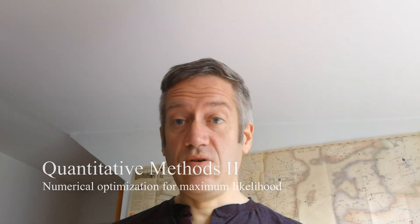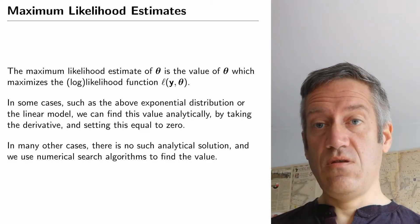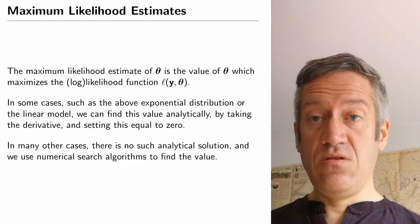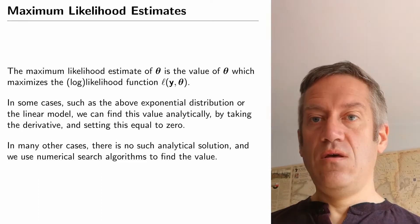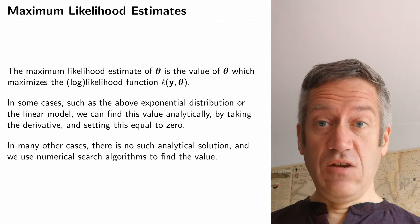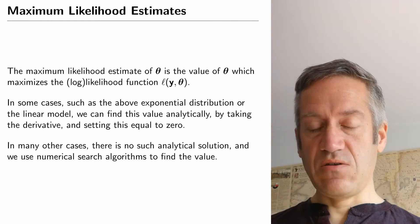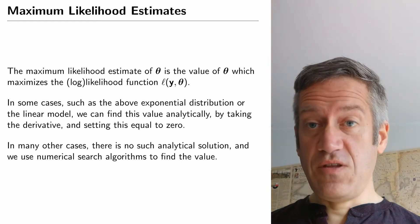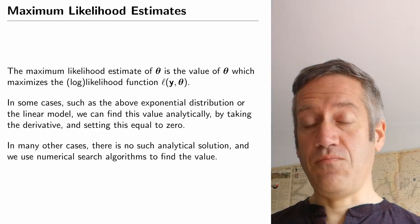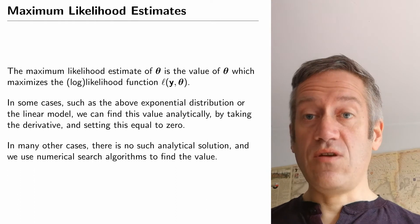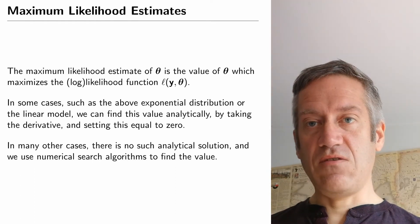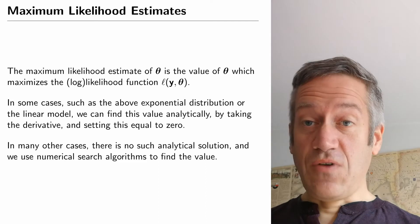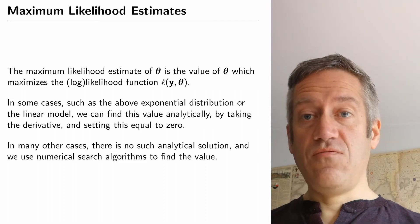For both the exponential model and the linear model, we have given you examples of analytical solutions. We could work out the probability density function for the dependent variable, treat that as a likelihood function by focusing on the parameters, and then find the value where the derivative of this function is zero — the point along the parameter values that maximizes the likelihood of the data. So we could find analytical equations for the estimates.